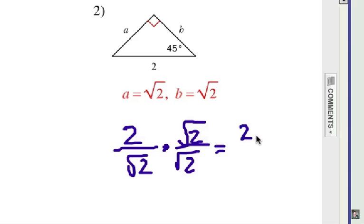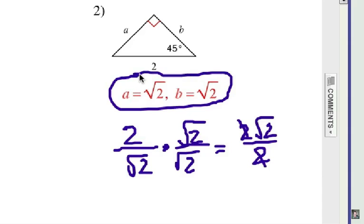So that's going to give us 2 radical 2 over radical 4, and as I said before on the previous problem, that cancels the radical out. Alright, notice now that these factors of 2 cancel out, leave me with these 2 answers for the legs. Alright, 45, 45, 90.